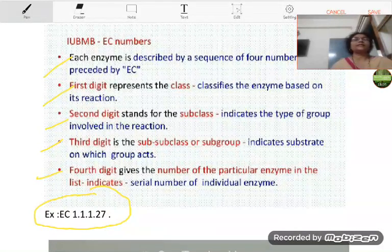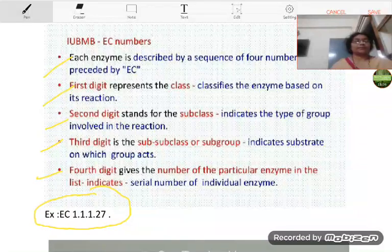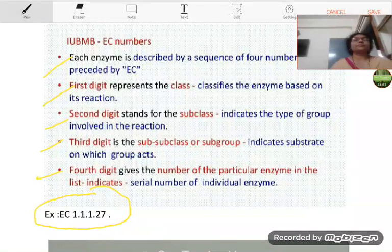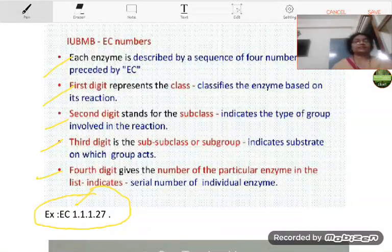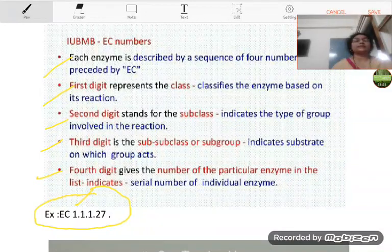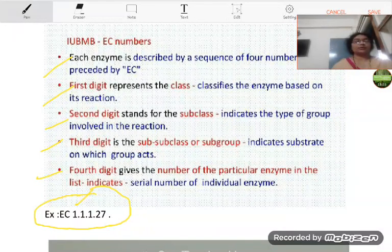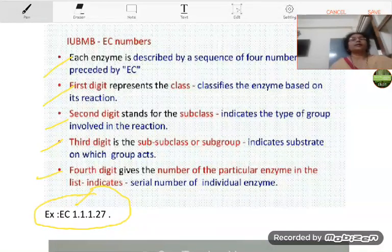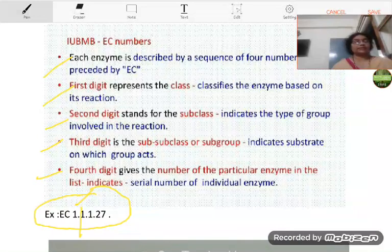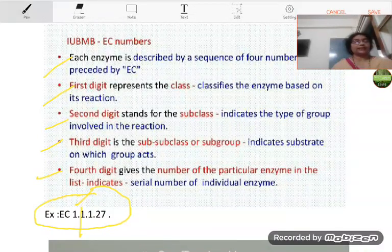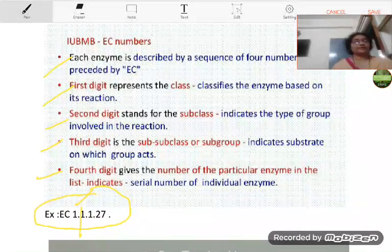First number is 1. So, what was the first class we have studied earlier? That is oxidoreductase. Now, second number is also 1. It means the enzyme belongs to first subclass.